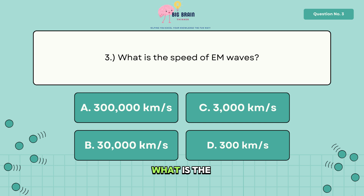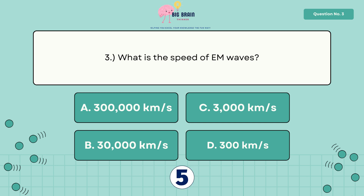Three, what is the speed of EM waves? The answer is letter A, 300,000 km per second.